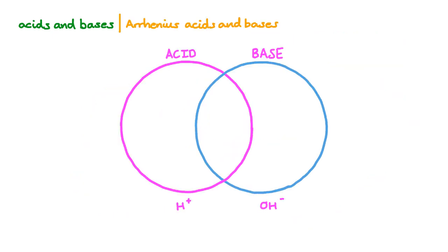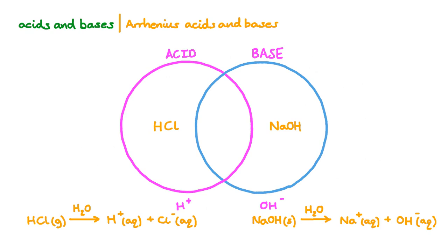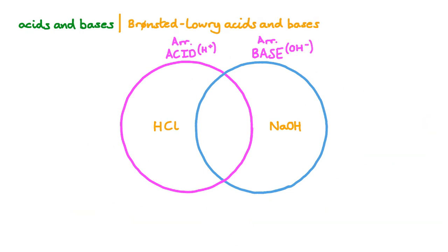In 1887, Svante Arrhenius described acids and bases on the basis of whether they produced hydrogen ions or hydroxide ions when added to water. When we add Arrhenius acids to water, they dissociate, forming hydrogen ions. Hydrogen ions and hydroxide ions react to make water, which accounts for the fact that generally Arrhenius bases will react with Arrhenius acids in a consistent way.